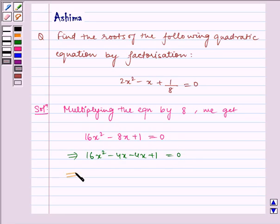Which implies, taking 4x common from the first terms, we get 4x(4x - 1). Taking -1 common from the last terms, we get -1(4x - 1) = 0.